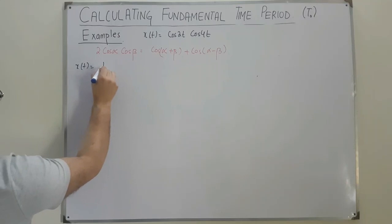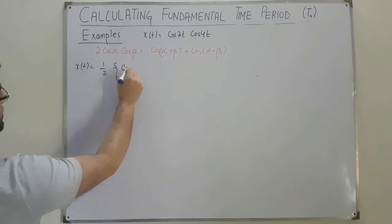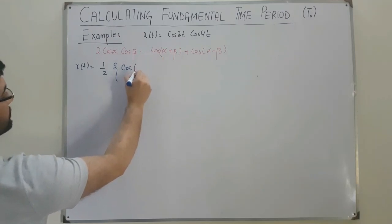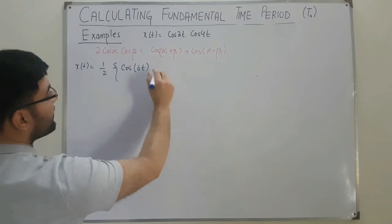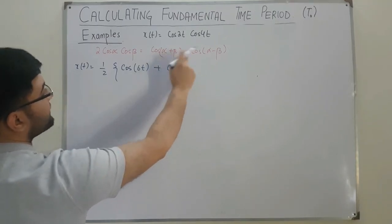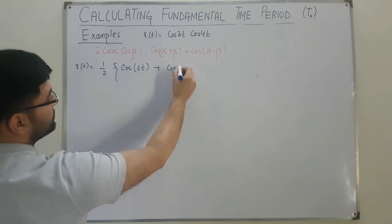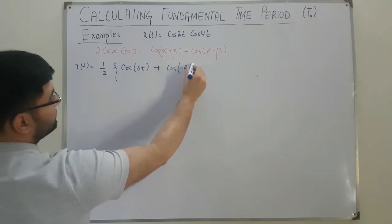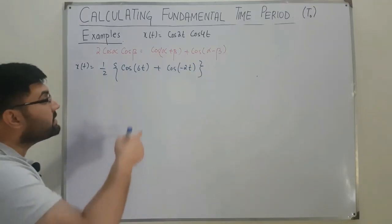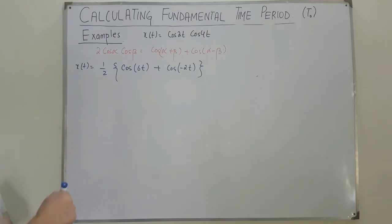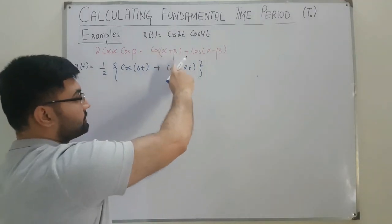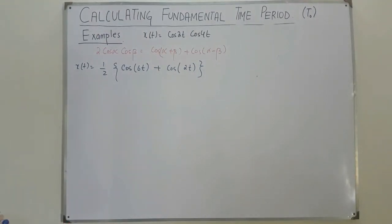So x(t) = (1/2)·[cos(α + β) + cos(α − β)] = (1/2)·[cos(6t) + cos(−2t)]. Since cosine is an even function, cos(−2t) = cos(2t), so we simplify to cos(2t).